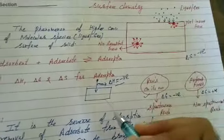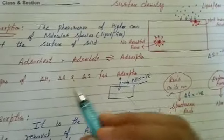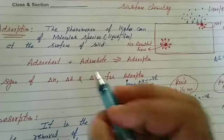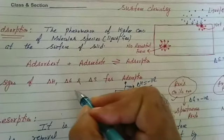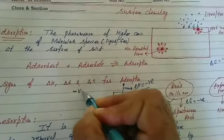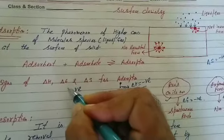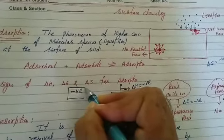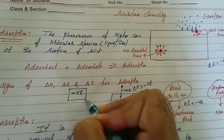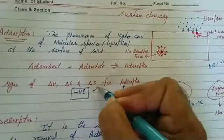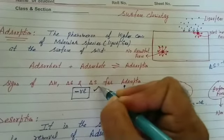So, no confusion — the signs of ΔH, ΔG, and ΔS for adsorption are all negative. In competitive exams, questions will frequently come from this topic.